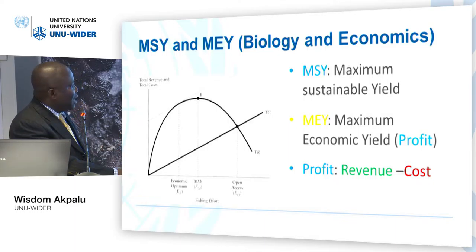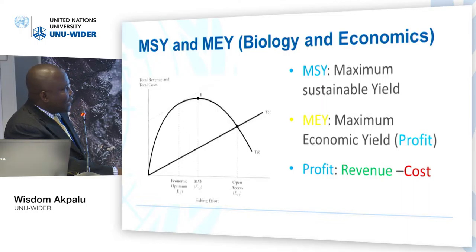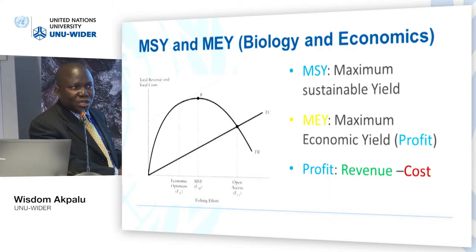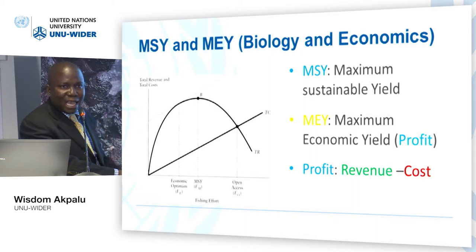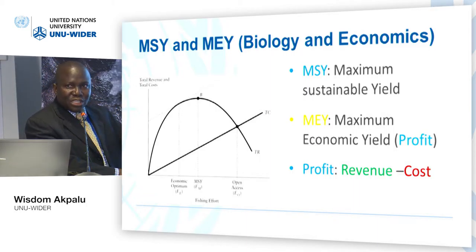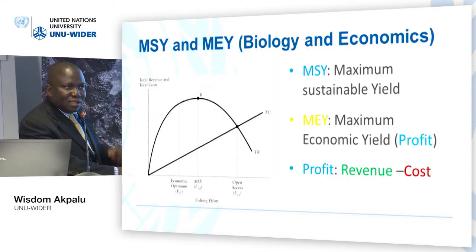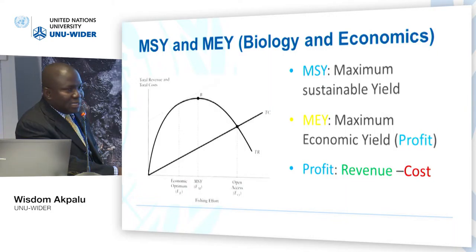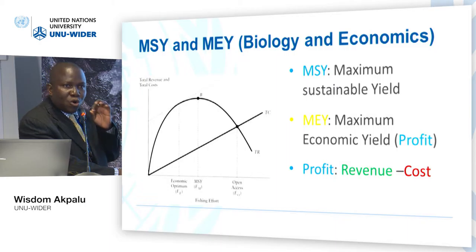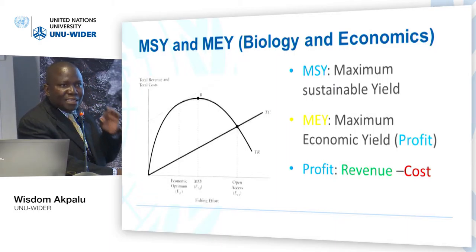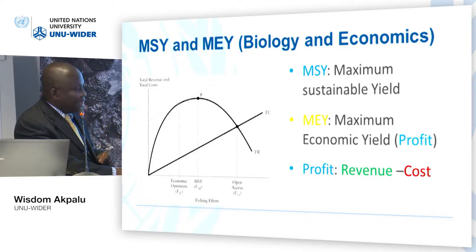However, there are situations where effort levels are intensified until we reach the point where, if you do not go to catch the fish, your neighbor will. With so many individuals chasing the fish, as long as there is the smallest profit to be made, they will continue to invest effort until they hit the point where profits are zero — because the cost of harvesting equals the revenue obtained. This is the open access level of effort.